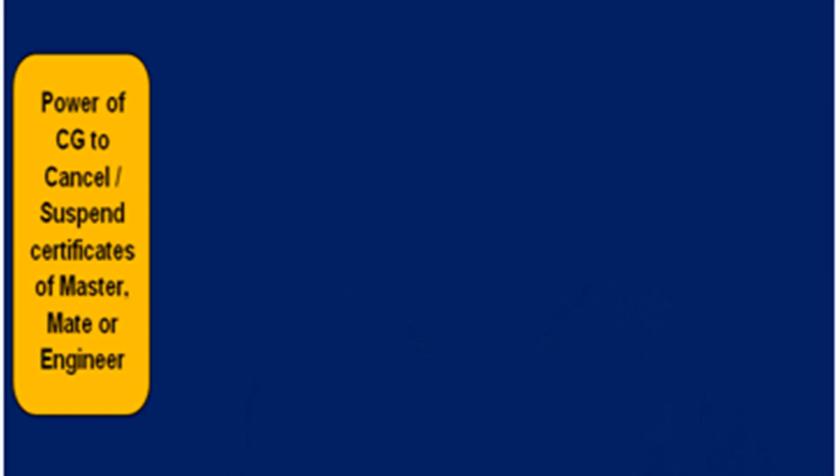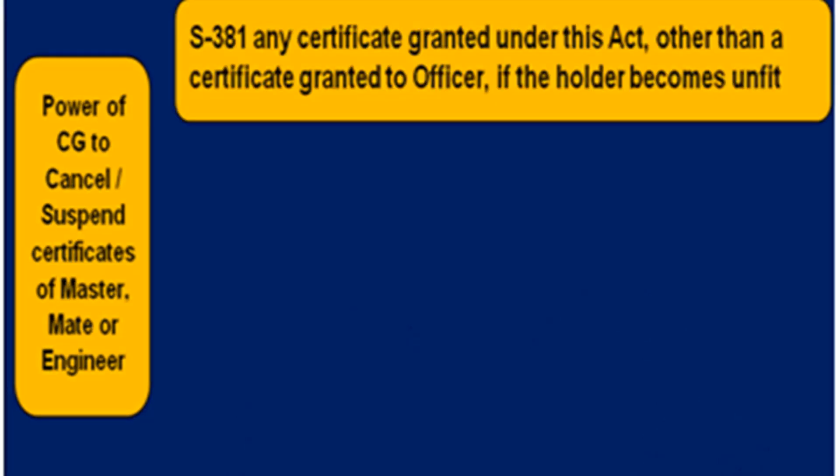It is not the case that the central government must first get the investigation done under Marine Board, a foreign legislative body, or a court in India. The central government can directly cancel the certificate as well. Section 381 states that notwithstanding anything contained in the Act, the central government may at any time, without any formal investigation or inquiry, cancel or suspend any certificate granted by it under the Act — other than a certificate granted to a master, mate or engineer — if it is of the opinion that the holder is or has become unfit to act in the grade for which the certificate was granted.